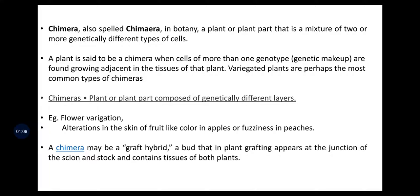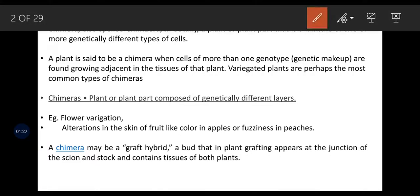The simplest definition of Chimera says a plant or plant part composed of genetically different layers is Chimera. Examples include flower variation, alteration in the skin of fruit like color in apples or fuzziness in peaches. Chimera may be a graft hybrid that in a grafted plant appears at the junction of the scion and stock and contains tissue of both plants.